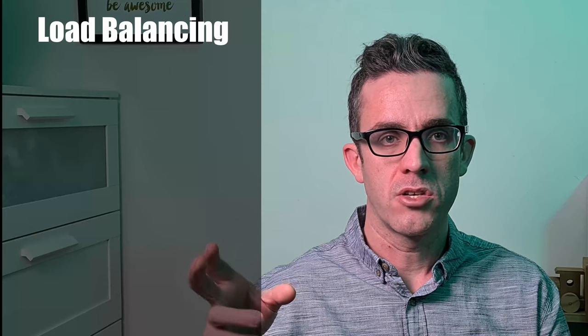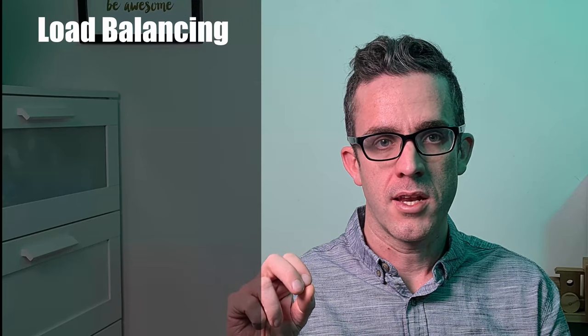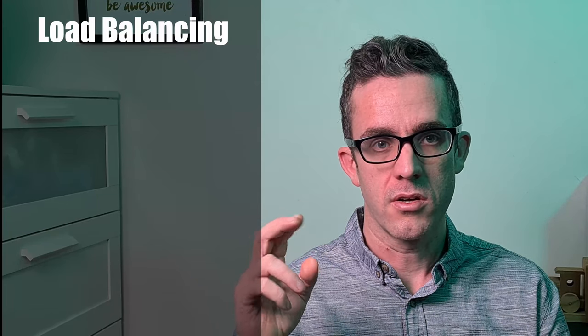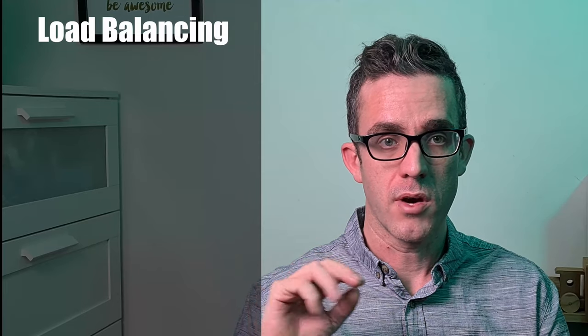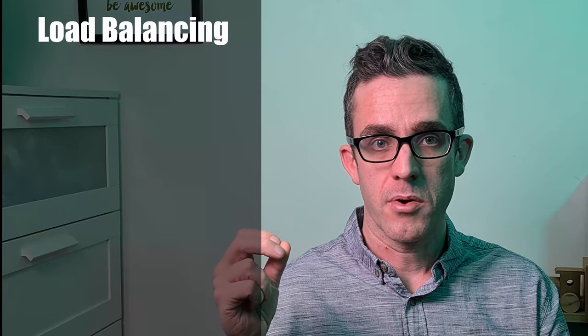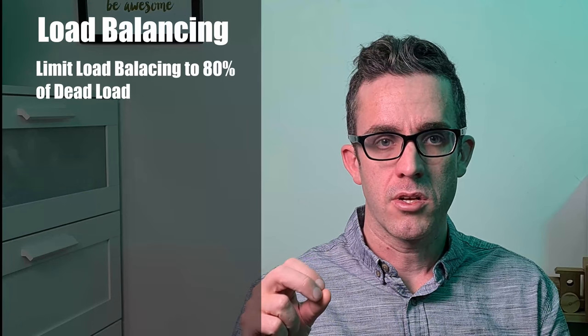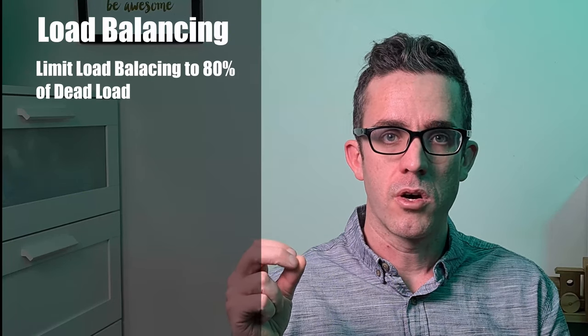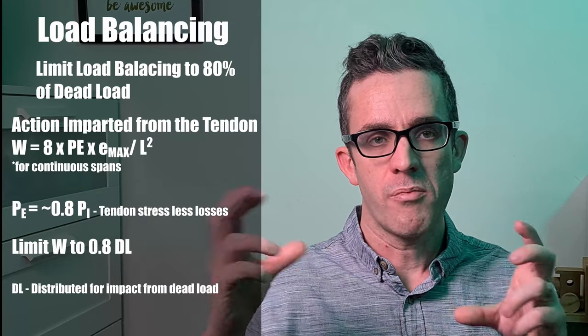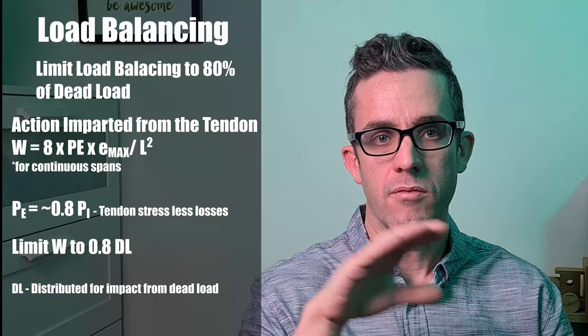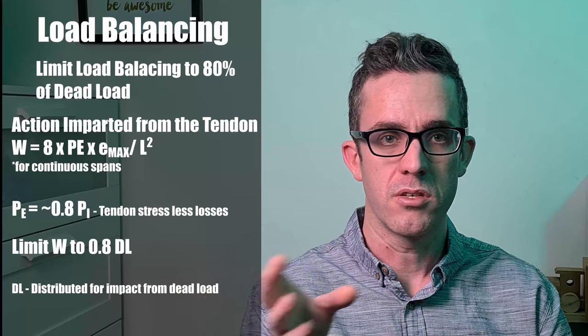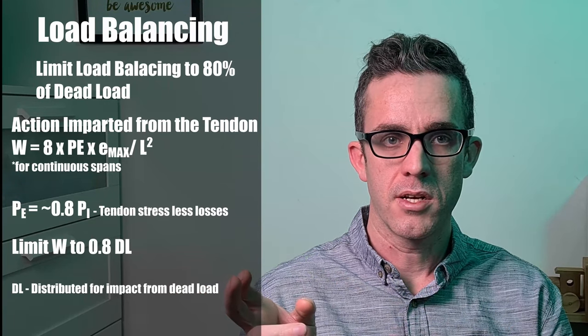Now how about load balancing? As you remember earlier I said that the tendons impart a net upwards force on side of our structure or downwards force depending on which way the tendon is going. When we're designing our post-tensioning we want to make sure they're not balancing any more than about 80 percent. This is similar to the pre-camber of steel beams. So why do we do this? Because if we over balance the structure we can have a net hogging force across the structure which would be detrimental to our design. So generally we want to make sure we're about 80 percent.